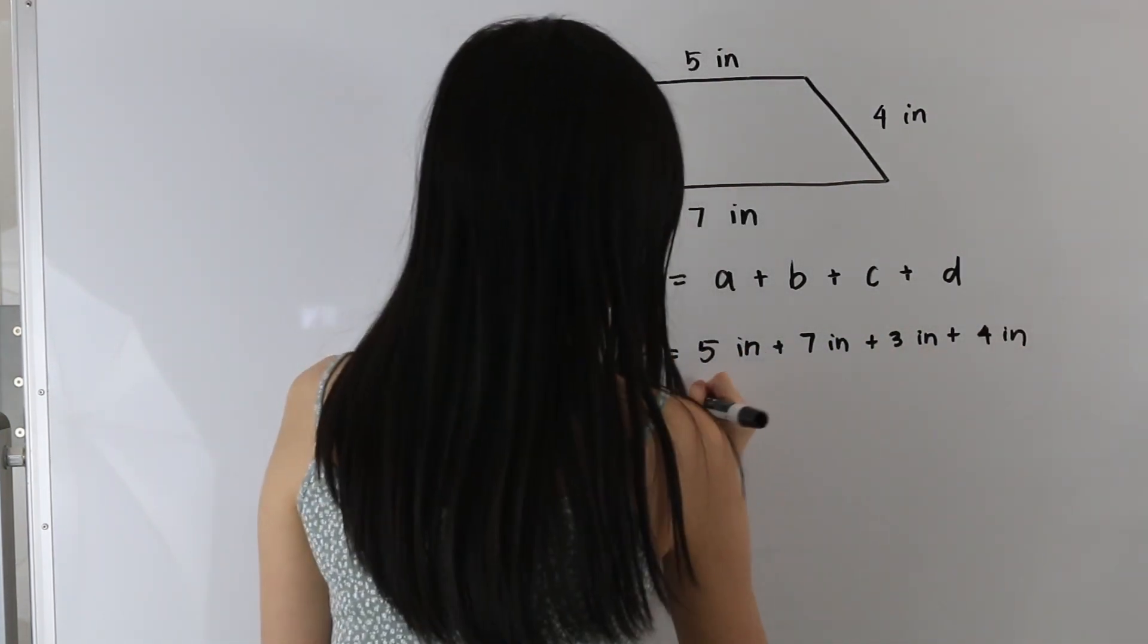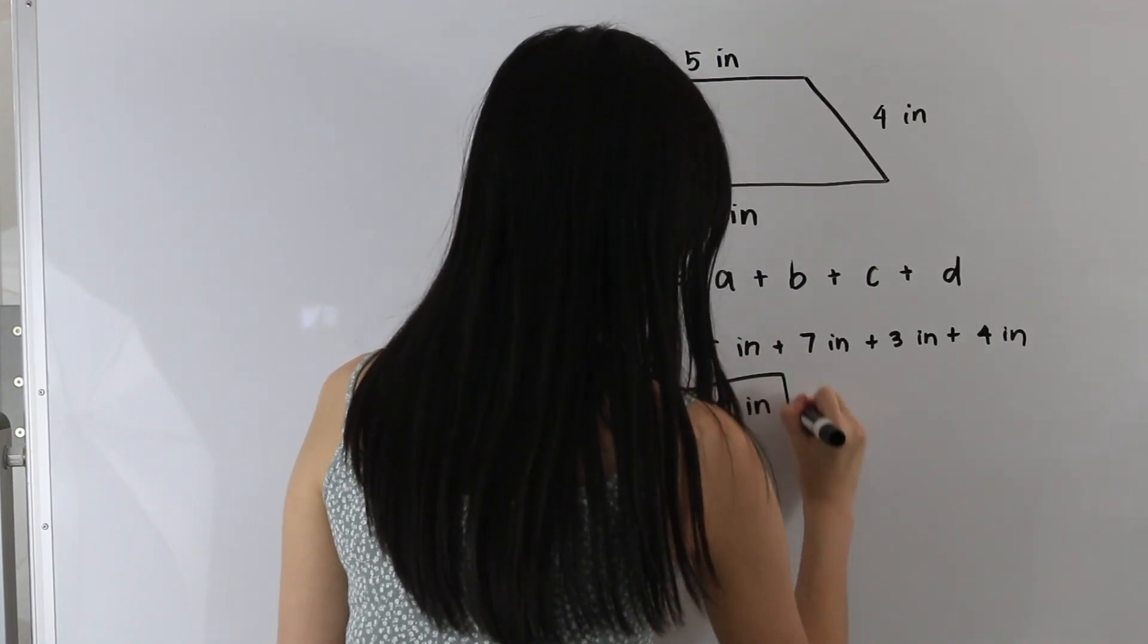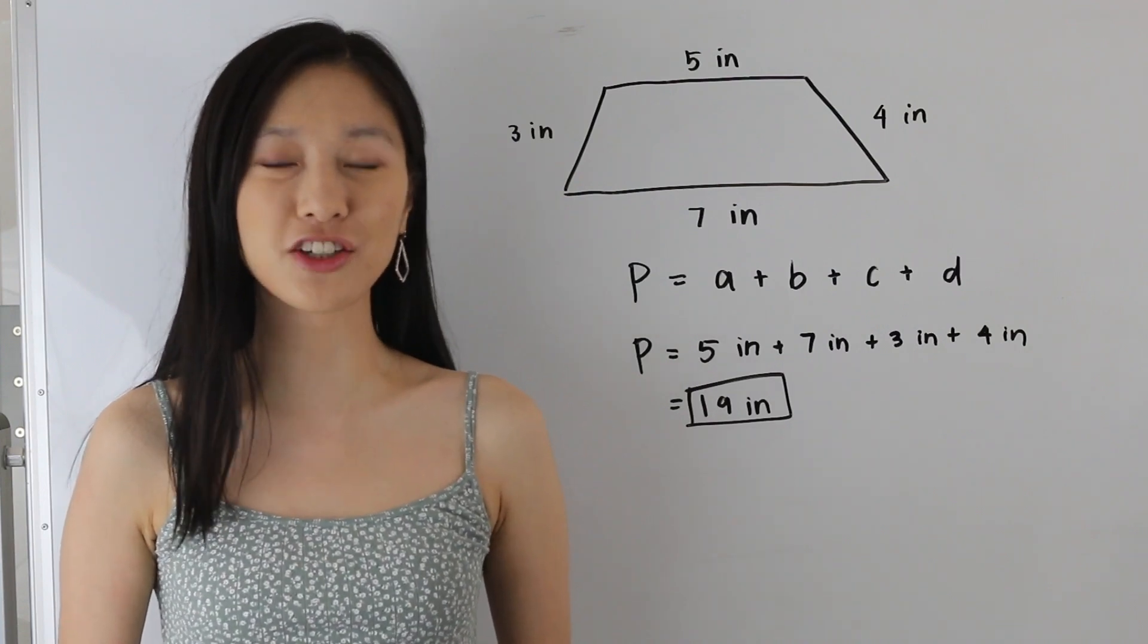And so adding this up we get 19 inches and that is our final answer and so that is how to find the perimeter of a trapezoid.